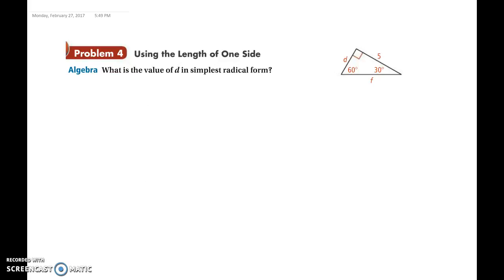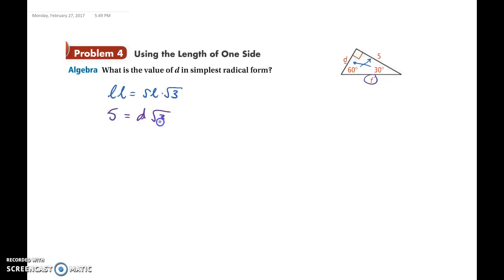So we want to know what the value of D is. This is a 30-60-90 triangle, and D is our shortest leg opposite 30, and 60 is our longer leg. Since we only want to find what D is equal to, we only need the formula that our longer leg equals our shorter leg times the square root of 3. We really don't care what our hypotenuse is at this given moment. So we will substitute in — our longer leg is 5, our shorter leg is D — so 5 equals D times the square root of 3.